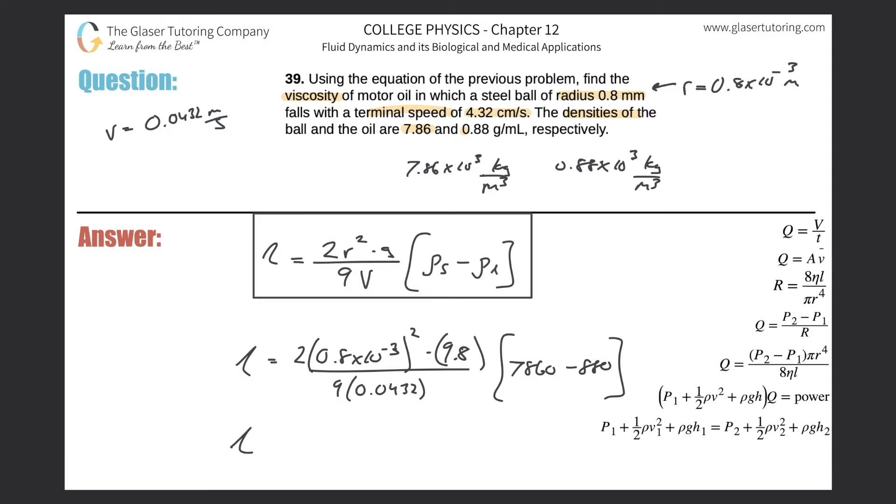Now, voila, take out the calculator. So we got 2 multiplied by 0.8 times 10 to the minus 3 squared, multiplied by 9.8, divided by now by parenthesis 9 times 0.0432. And then we'll take that and there's an error.